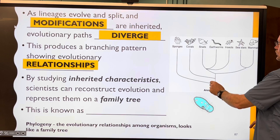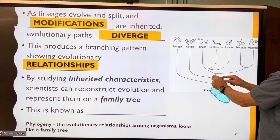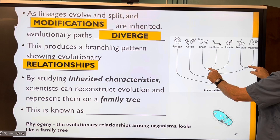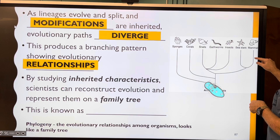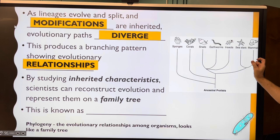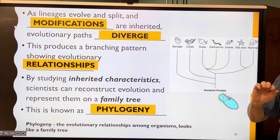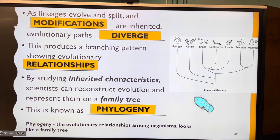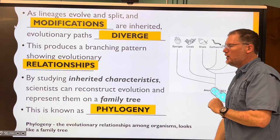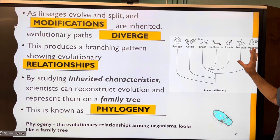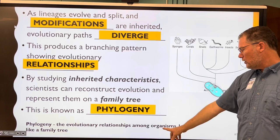By studying characteristics of these organisms inherited through this branching pattern, scientists can reconstruct evolution and represent this family tree. That family tree is known as a phylogeny — the evolutionary relationships among organisms. This is a phylogeny tree.